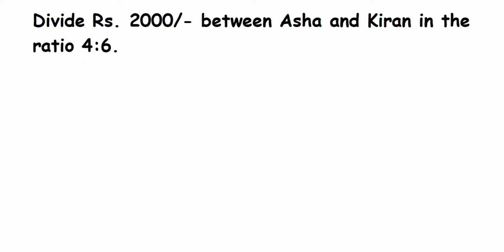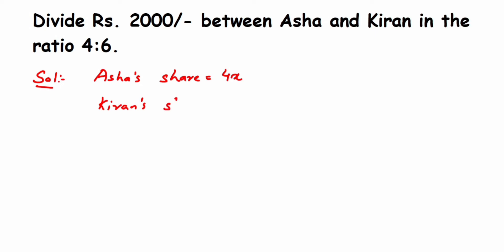So let's start solving. First is Asha — Asha's ratio is 4. Since the ratios can be given in reduced form or some other form, we're going to take Asha's share as 4x. So Asha's share will be equal to 4x, and then Kiran's share will be equal to 6x.